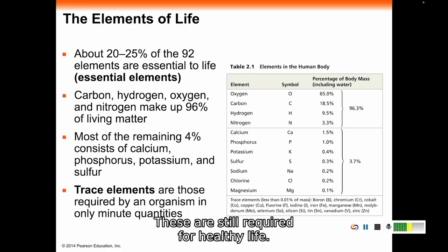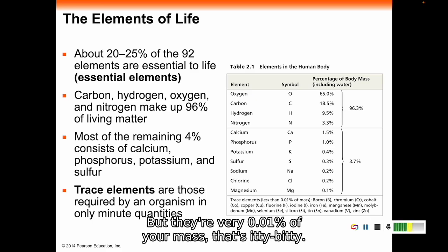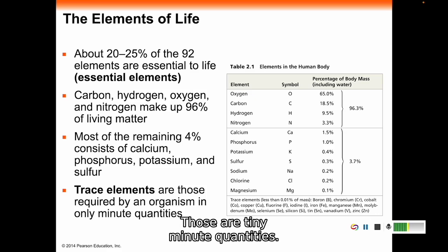These are still required for healthy life. If you don't have enough fluorine, you won't have healthy teeth. If you don't have enough iodine, you might develop goiter. If you don't have enough iron, you can get anemic. But they're 0.01% of your mass. Those are tiny quantities. Those are called trace elements. They're required by your organism for healthy life, but only in tiny quantities.